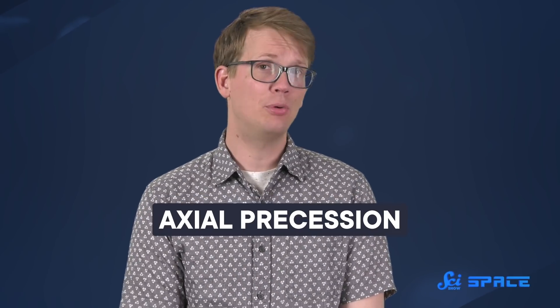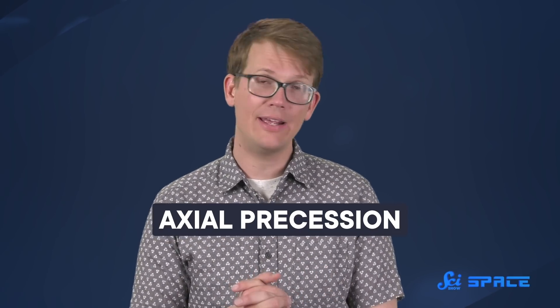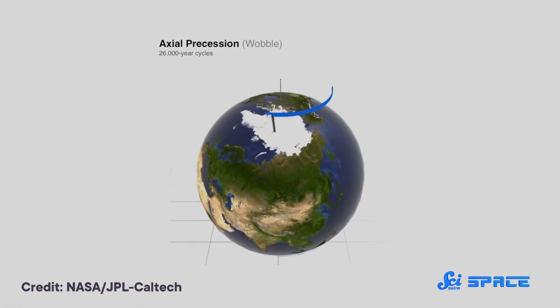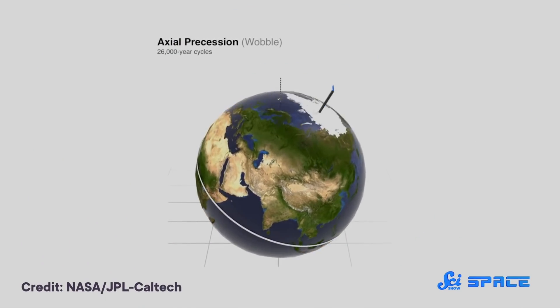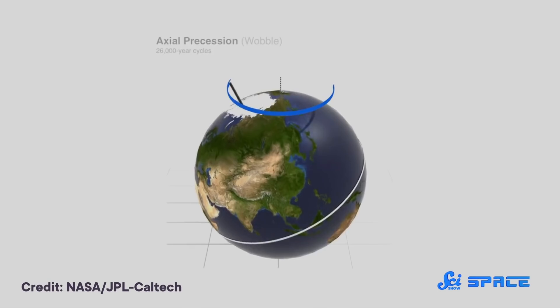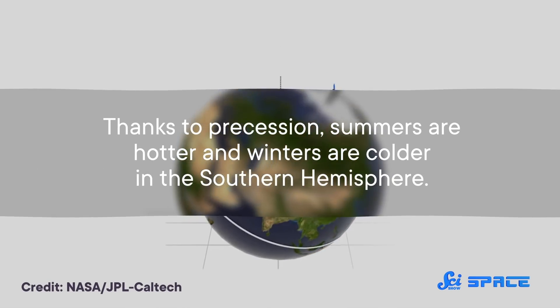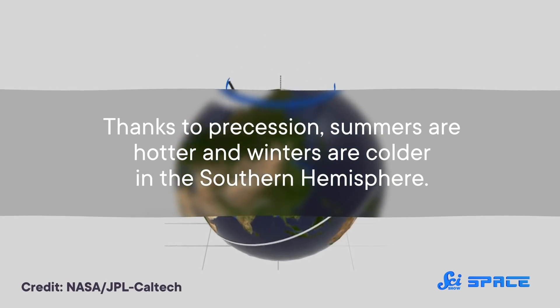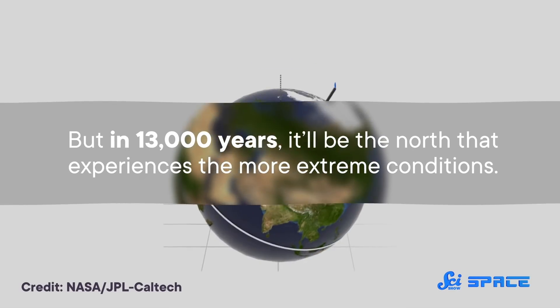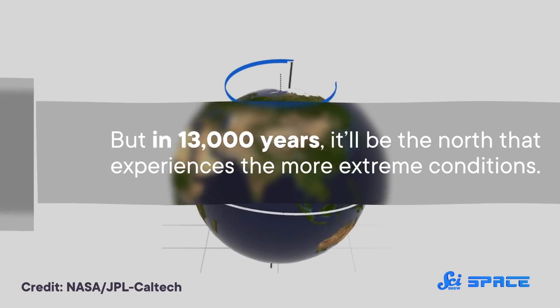And finally, we have our axial precession, or how wobbly the planet is as it rotates. This varies over 26,000 years and is responsible for how balanced the seasons are in the northern and southern hemispheres. Thanks to precession, summers are hotter and winters are colder in the southern hemisphere. But in 13,000 years, it'll be the north that experiences the more extreme conditions.